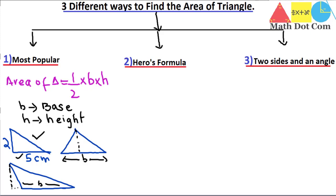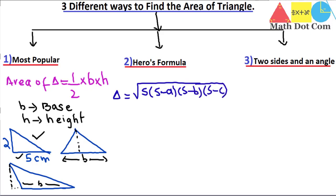Another way to find the area of a triangle is Heron's formula. It is written as: area = √(s · (s−a) · (s−b) · (s−c)). Here, s is the half-perimeter — that is, the perimeter divided by 2. The perimeter is the sum of all sides, so when you divide that sum by 2 you get s.